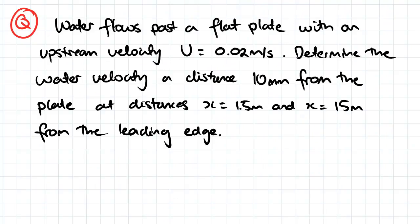So our question here, we've got water flowing past a flat plate and it's got an upstream velocity of 0.02 meters per second. What we need to determine is the velocity at a distance of 10 millimeters from the plate at distances X equals 1.5 meters and X equals 15 meters from the leading edge.